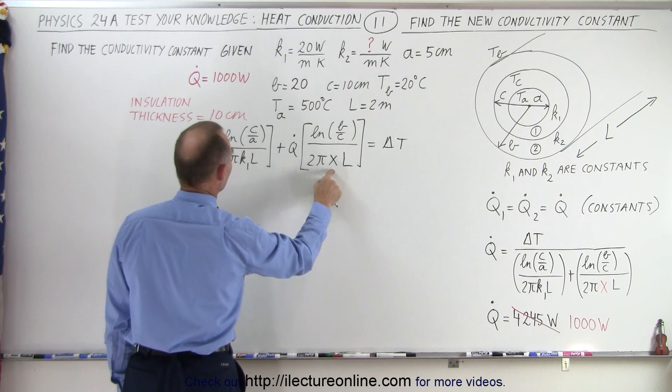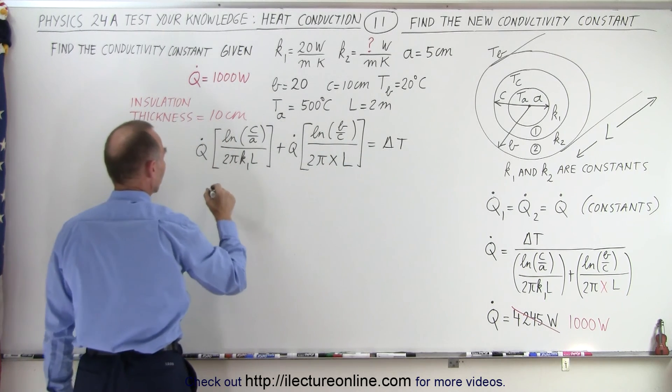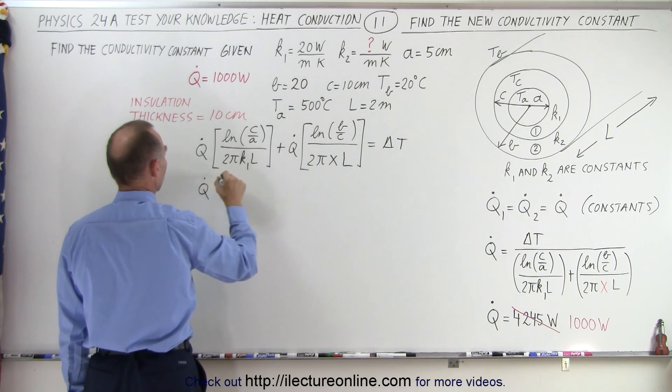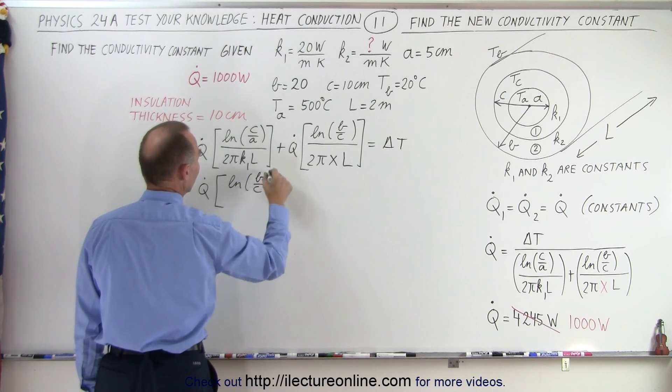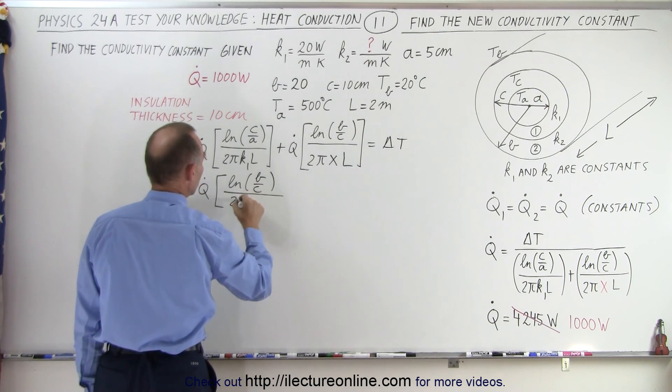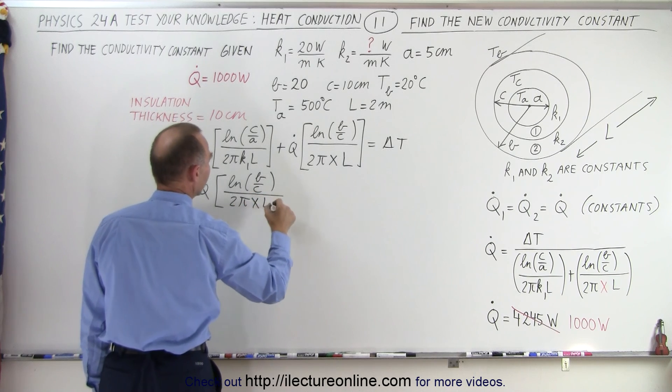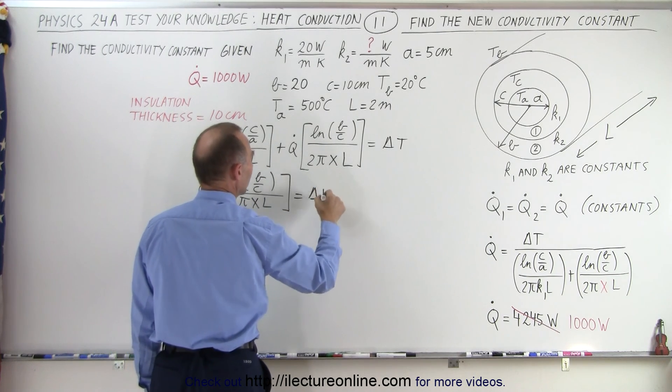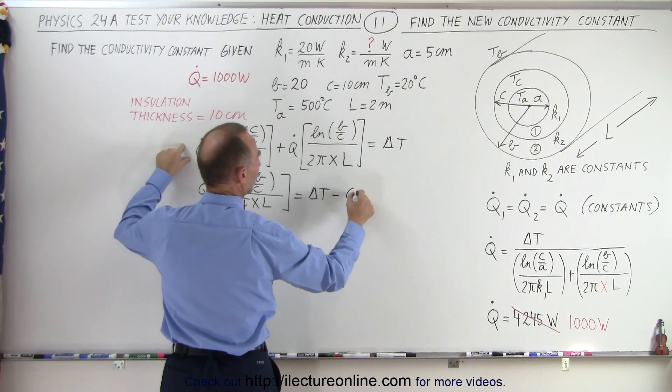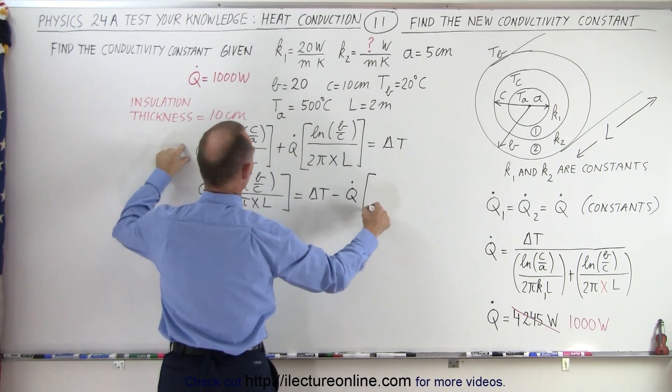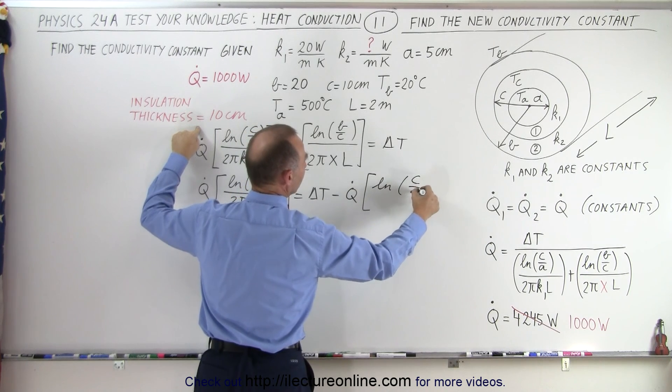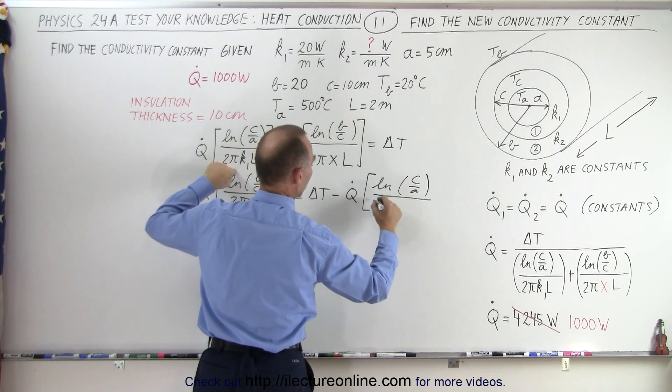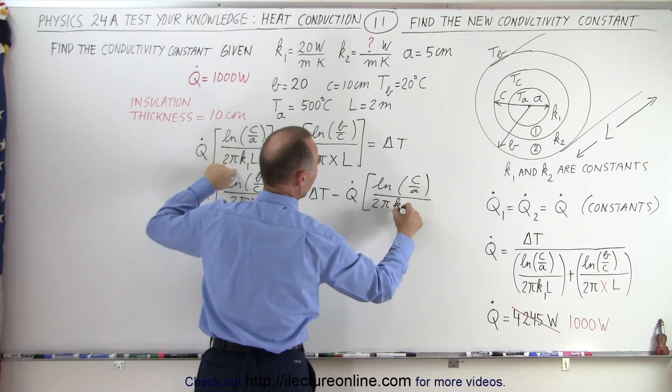So since we're looking for X here, we're going to move this to the other side, so we have Q dot times the natural log of B over C, divided by 2 pi X L is equal to the delta T minus this portion right here, which is Q dot times the natural log of C over A divided by 2 pi K1 L.